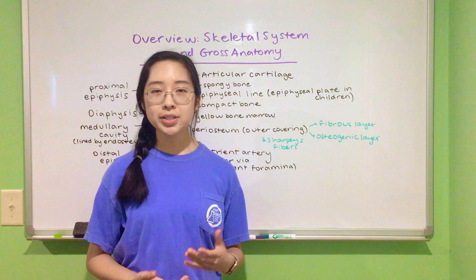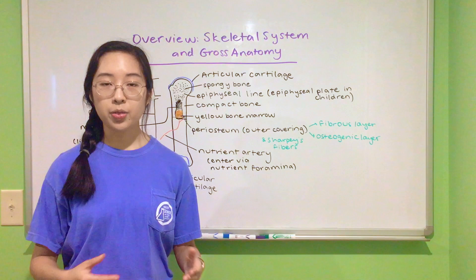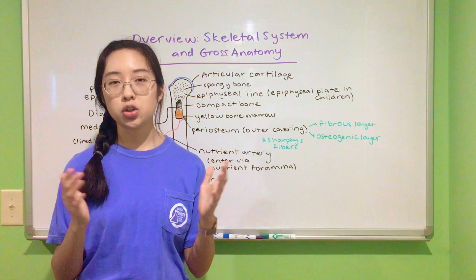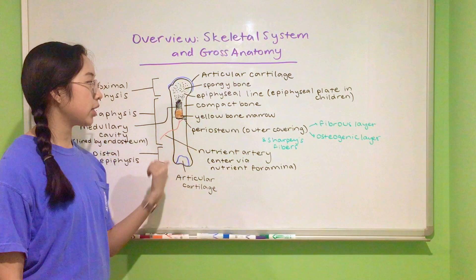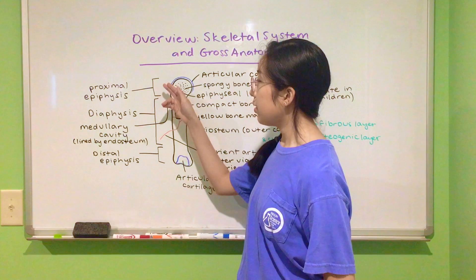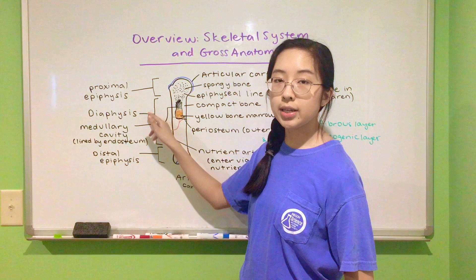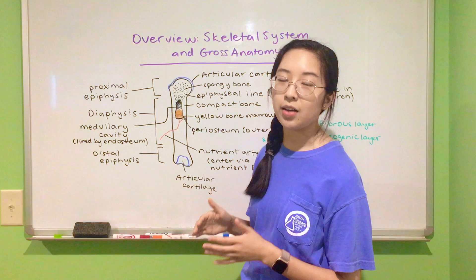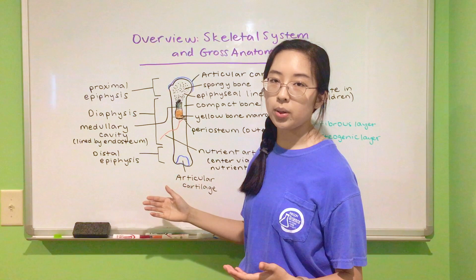Now we're going to talk about the gross anatomy of a long bone. Gross anatomy just means on a macroscopic scale — things we can see with the naked eye, in contrast to microscopic. Here is a rough diagram of the humerus. We can split the bone into three major sections: the proximal epiphysis, the distal epiphysis, and the diaphysis. The diaphysis is the middle long shaft part of the bone and makes up most of it. The epiphyses are the shorter, more rounded expanded ends. The proximal epiphysis is closer to the shoulder, whereas the distal epiphysis is away from the shoulder and attachment point.